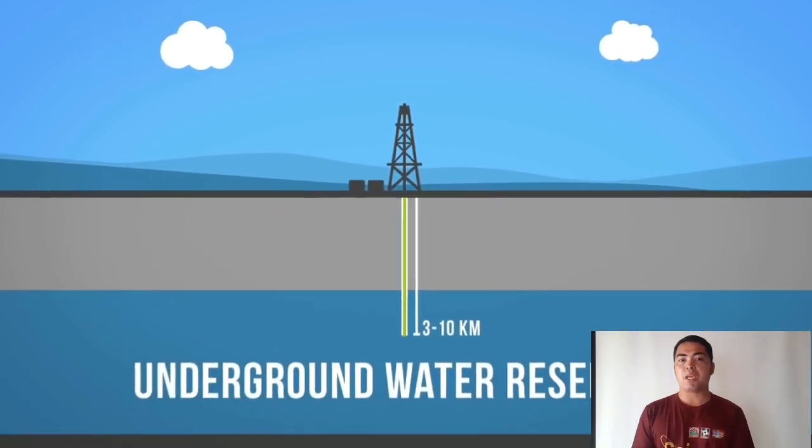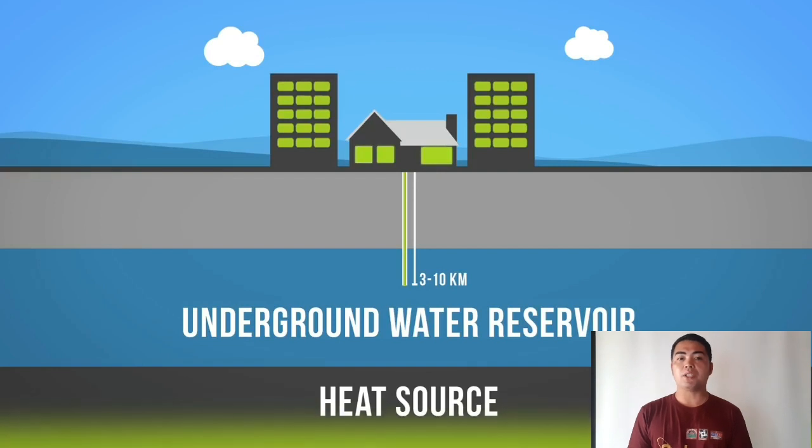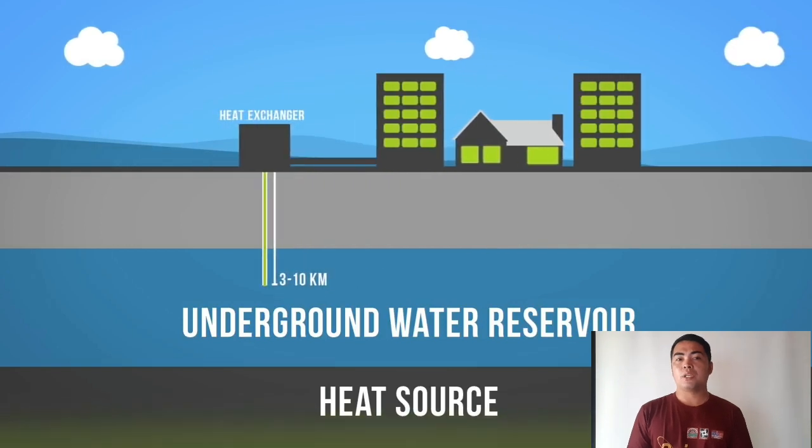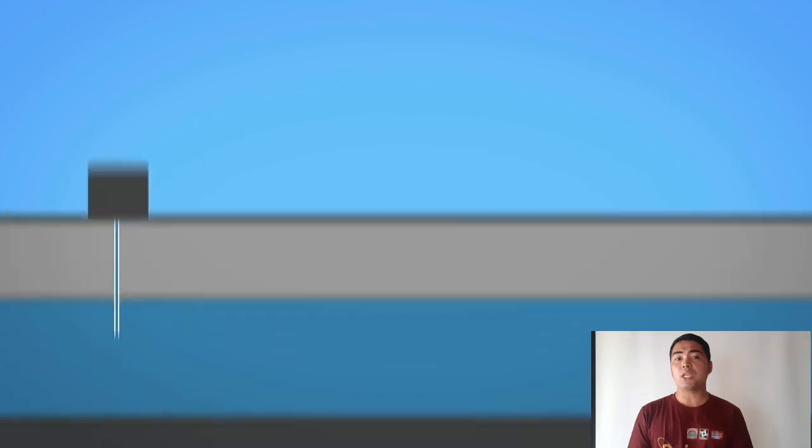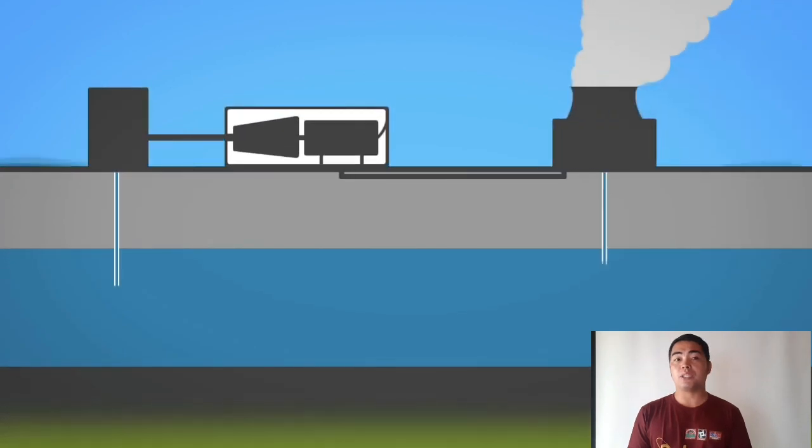Hot water from the earth may be directly extracted to heat homes and buildings. This is done by either directly circulating the hot water through buildings or by pumping through a heat exchanger that transfers heat to the buildings.